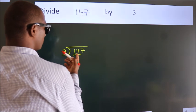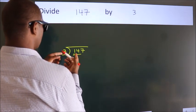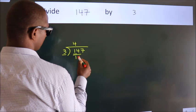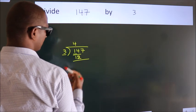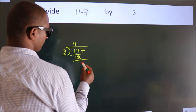A number close to 14 in 3 table is 3 fours 12. Now we should subtract. We get 2.